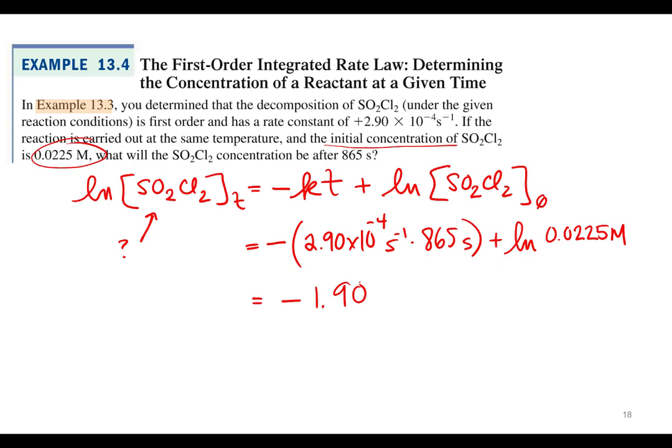What are we looking for again? Concentration. Concentration. We got a negative 1.90. Can we have a negative concentration? No. Is that right? Is that what everybody got?